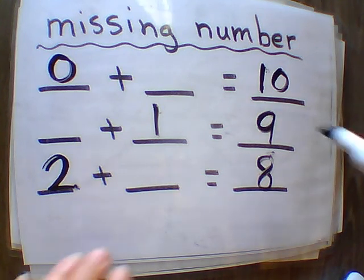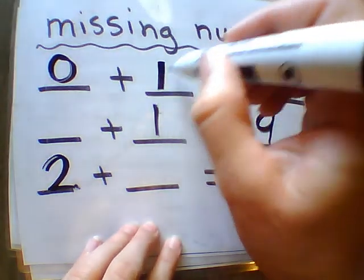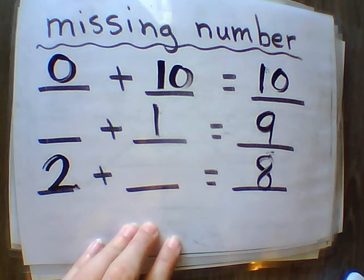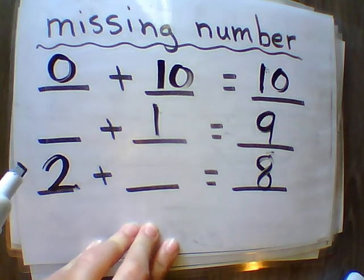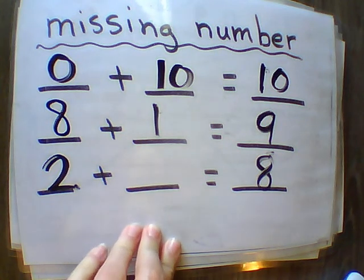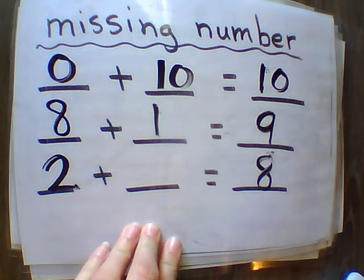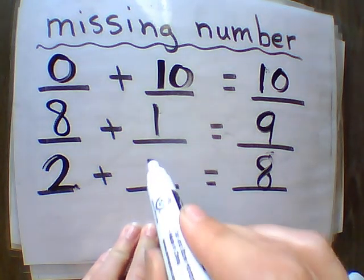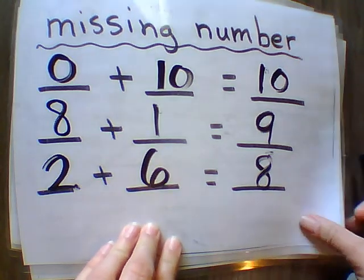So let's go through this. Zero plus blank equals 10. Zero plus 10 equals 10. Blank plus 1 equals 9. Eight plus 1 equals 9. And 2 plus blank equals 8. Two plus 6 equals 8.